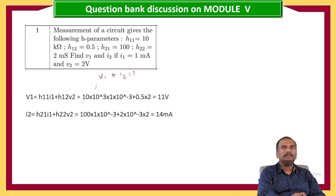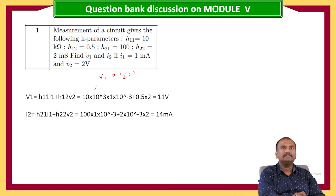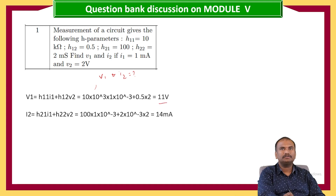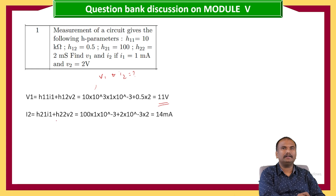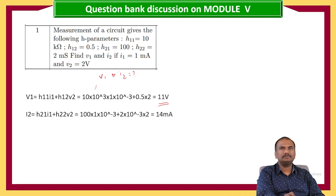By substituting the values: V1 equals H11 times I1 plus H12 times V2, that is 10×10³ times 1×10⁻³ plus 0.5 times 2, which equals 11 volts. In the same way, I2 equals H21 times I1 plus H22 times V2, that is 100 times 1×10⁻³ plus 2×10⁻³ times 2, which equals 14 milli amperes.